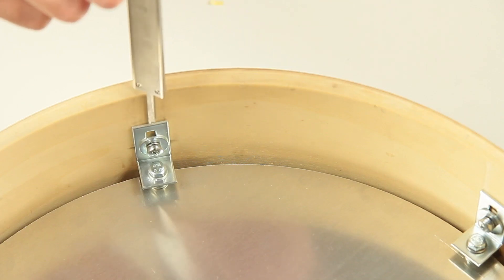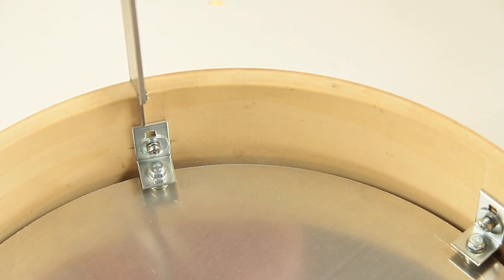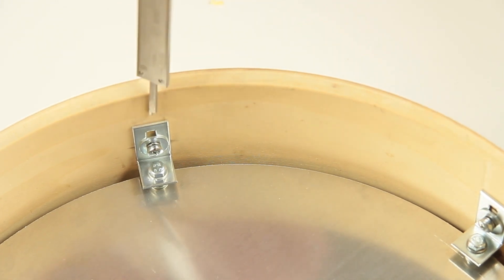All angles should be adjusted at the exact same height. The easiest way is measuring the distance from the angle top to the bearing edge.